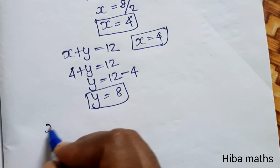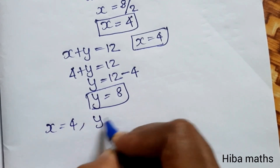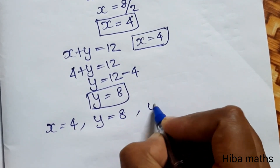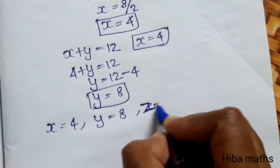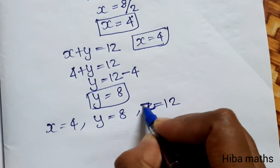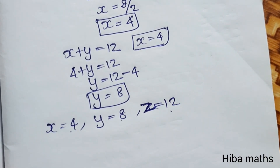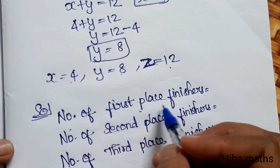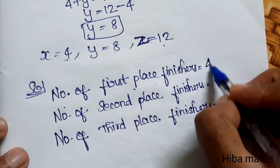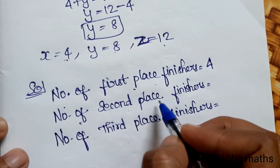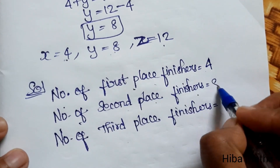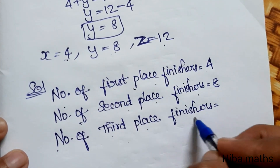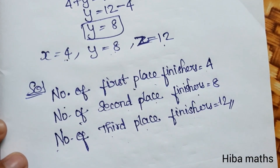Therefore: x equals 4, y equals 8, and z equals 12. The number of first-place finishes is 4, the number of second-place finishes is 8, and the number of third-place finishes is 12. Thank you so much for watching.